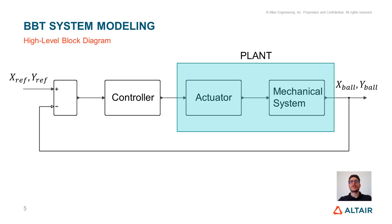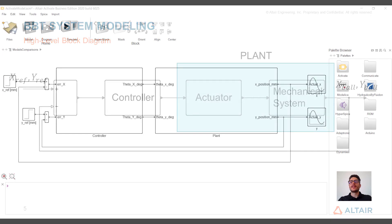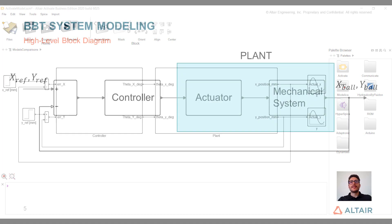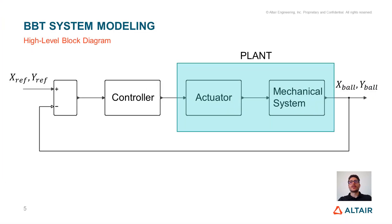This error signal is converted according to a certain control logic into a command which drives the RC servos. The movement of the servos is transmitted to the table through rod-end bearings, allowing the ball to follow the set reference. This working principle can be summed with a block diagram, and in Altair Activate we can easily reproduce this diagram and leverage its libraries to model each block. In this video we will focus on modeling the plant, which is made up of the mechanical system and actuators — the servo motors.